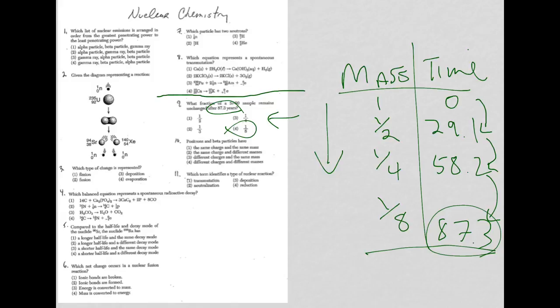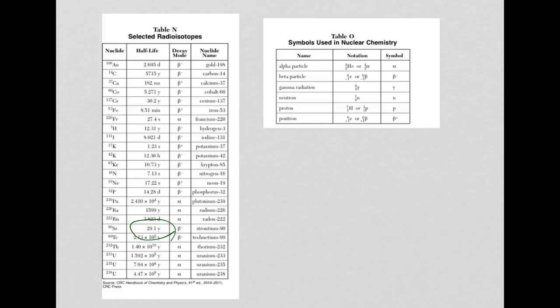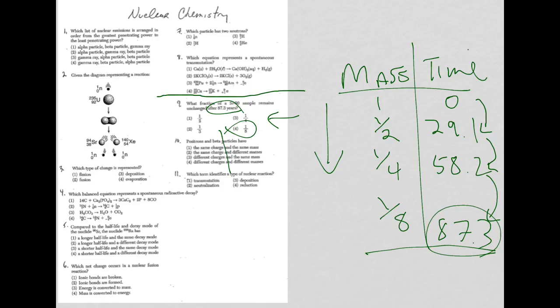For question 10, positrons and beta particles - what's the same, what's different? This is a two-for-one type question. I can use the help of reference table O. I'm looking for positrons and beta particles, and right away I can tell that the charges are different. Beta particles are negatively charged, positrons are positively charged. So different charges, and I'm going to cross out choices 1 and 2.